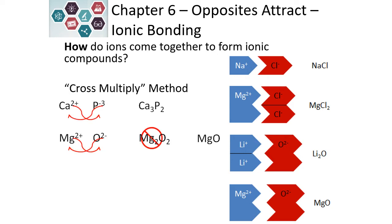There is another method that can be used, where we take the charge on the ion and make it the subscript for the other. The reason this works is because if we take three calcium, which are each a plus two, we get a plus six charge. And if we take two phosphorus, which are each a negative three charge, we get a minus six charge, and we end up with zero.